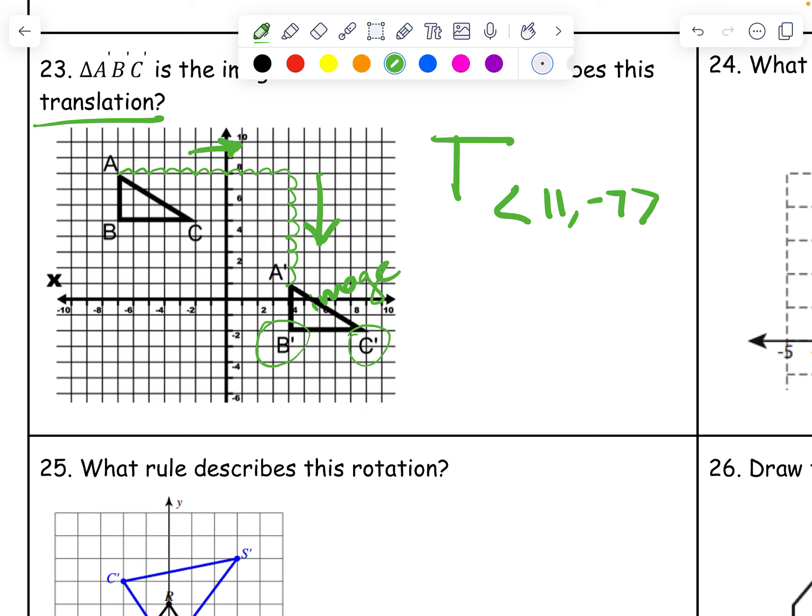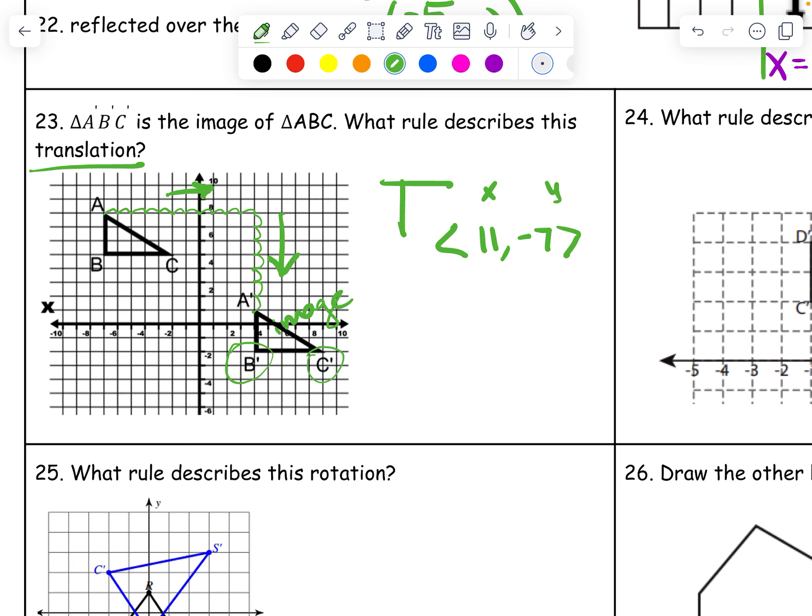You can check that with all your others. Make sure it's right. Over 11. Down 7. Remember, the X has to come first. The Y has to come second. The other way you could write this rule is going to be X plus 11 comma Y minus 7. Those are the two ways to write this.